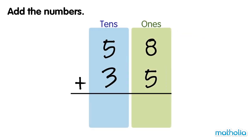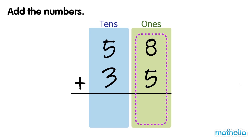Add the numbers: 58 plus 35. Let's start by adding the ones. 8 ones plus 5 ones equals 13 ones. We can regroup 13 ones into 1 ten and 3 ones. We write the 3 ones in the ones column and the 1 ten in the tens column.